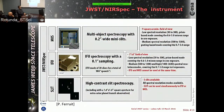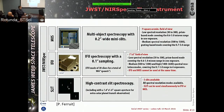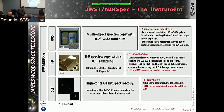The MSA is just one component of the instrument. We have three main modes: multi-object spectroscopy using the MSA is one of them. The others are an IFU for spatially resolved spectroscopy, and high contrast single object spectroscopy using a set of fixed slits — that's important for exoplanet time series observations. This talk will focus on the MOS mode.